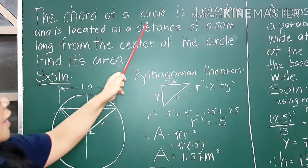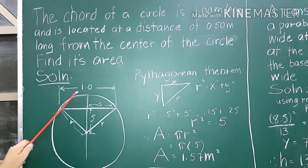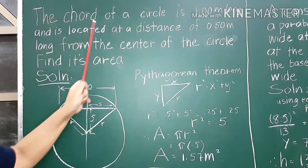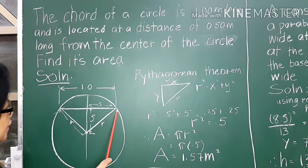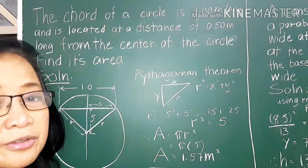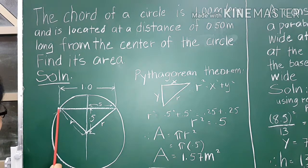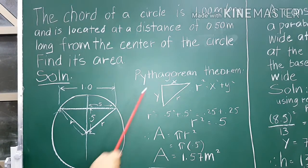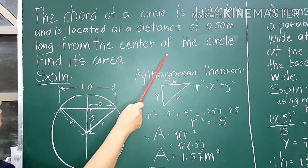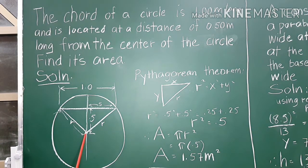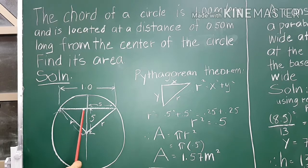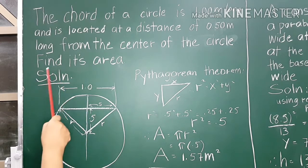We're talking about the chord of a circle, so we'll draw the circle. The chord means any straight line on a circle that connects two endpoints within the circle — it is called the chord of a circle. It is given that the chord is one meter long, from here to here, and is located at a distance of 0.5 meter from the center of the circle.